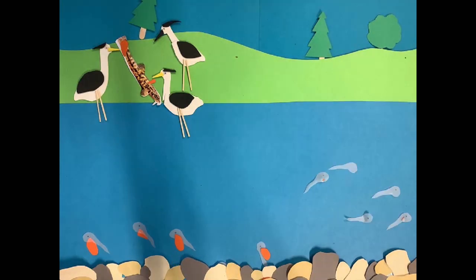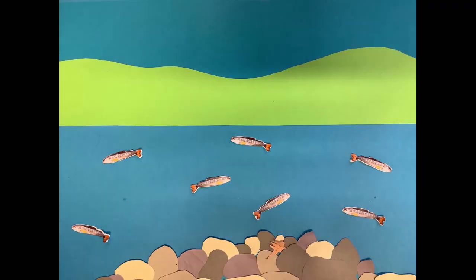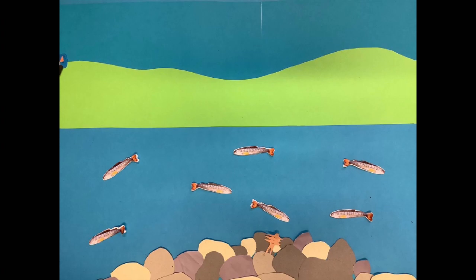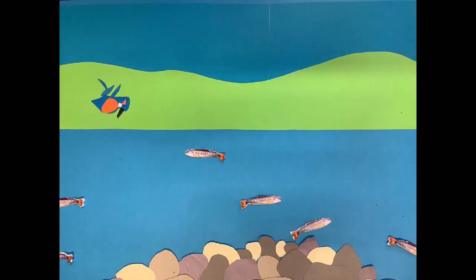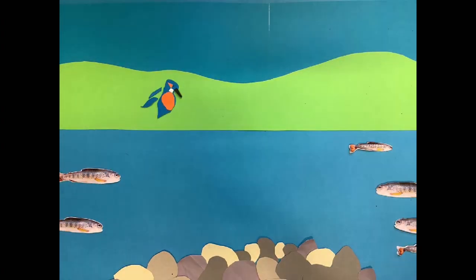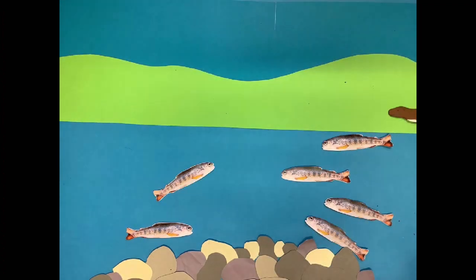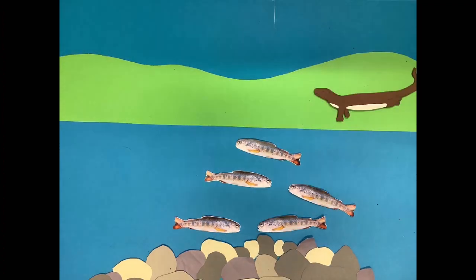Trout become known as fry. They start swimming about in the river, feeding on tiny invertebrates. After approximately one year in the river, trout become known as parr.